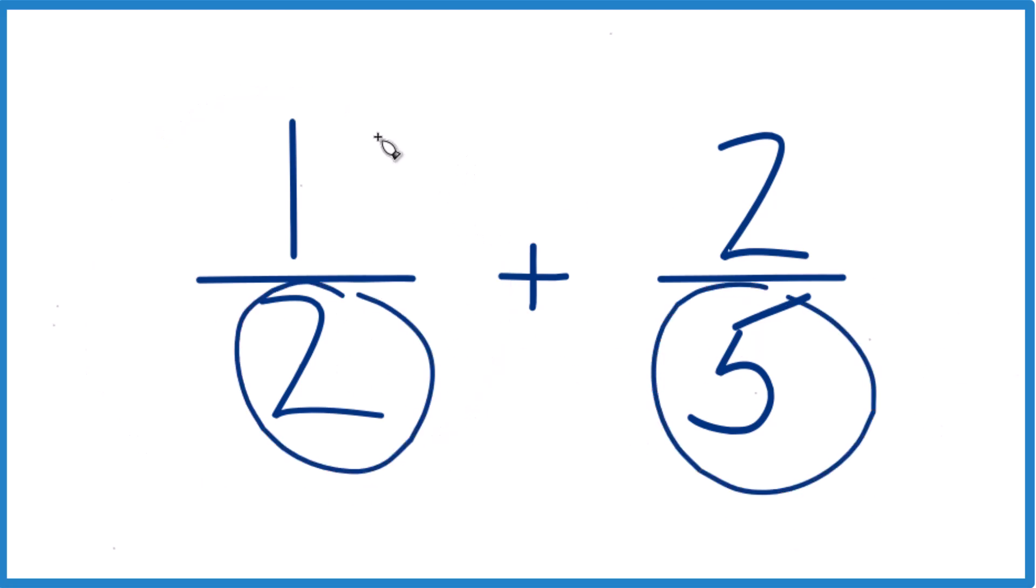we could just bring that across and then add the numerators. So when we add fractions, that works. Right now we have a two and a five. So why don't we do this?